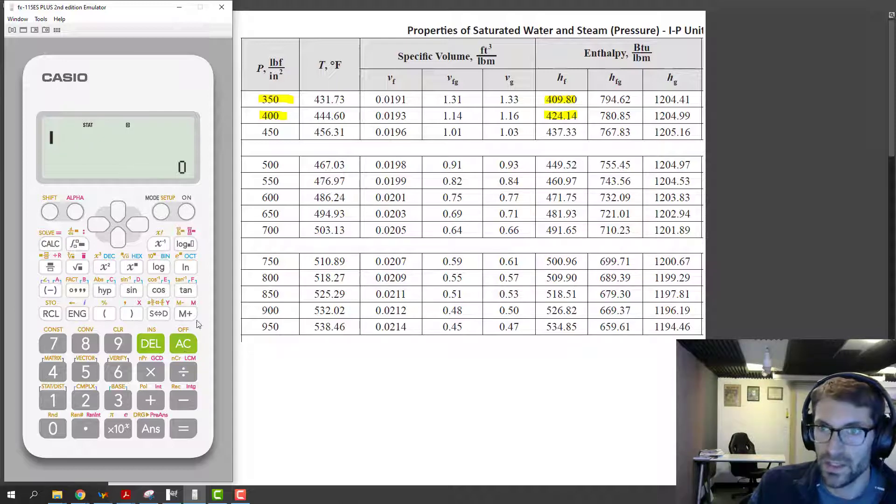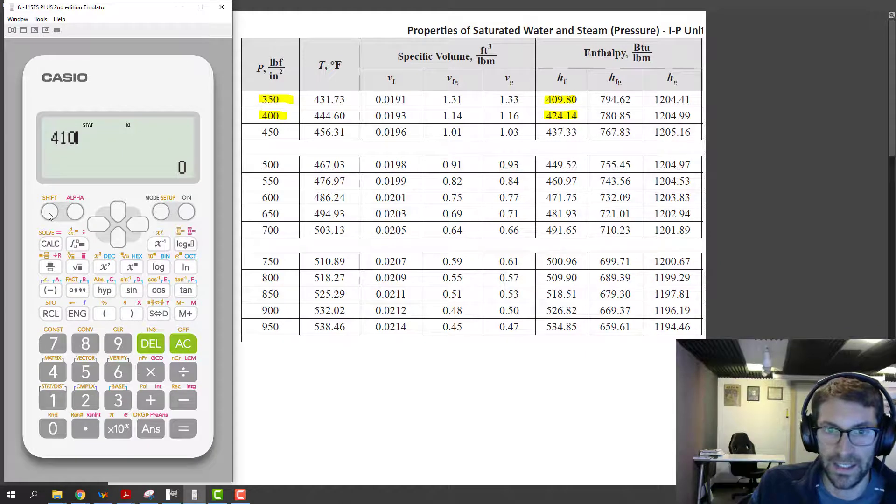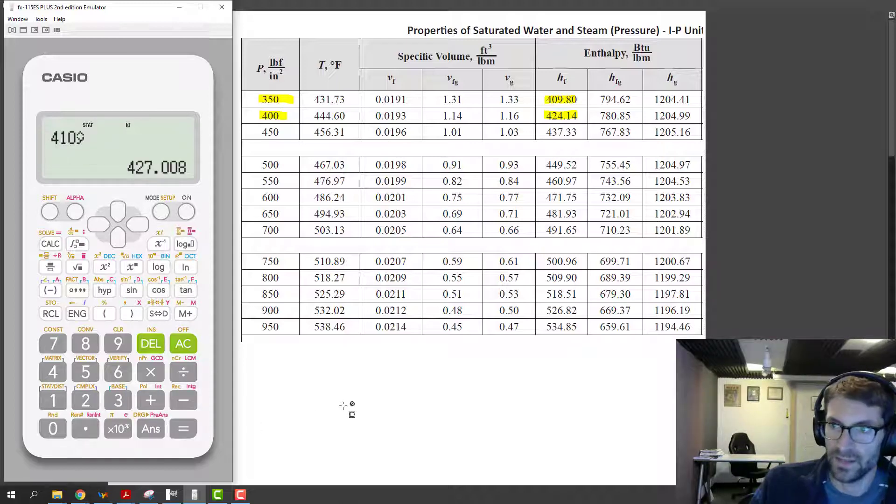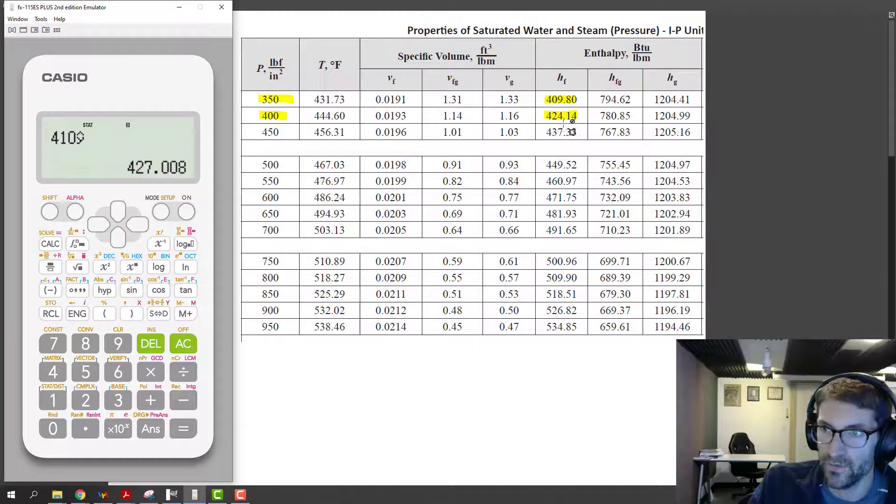So without changing the table or the data entry that we did already, suppose I wanted to know the corresponding enthalpy for 410 psi. I could still just type in 410 and then again shift stat 5 for regression and 5 for y hat equals, and I get 427.